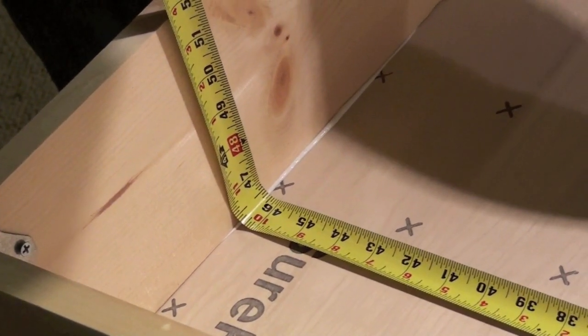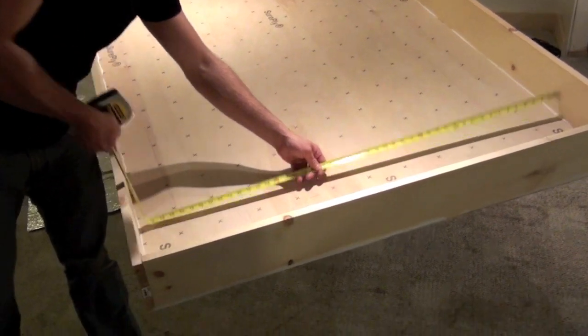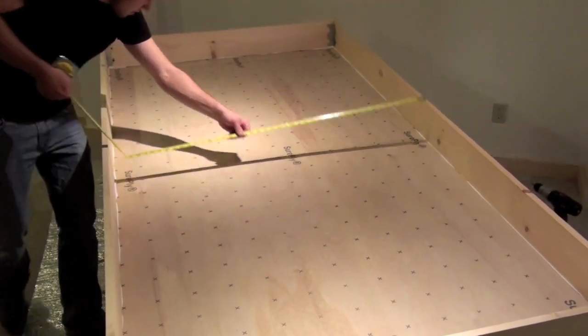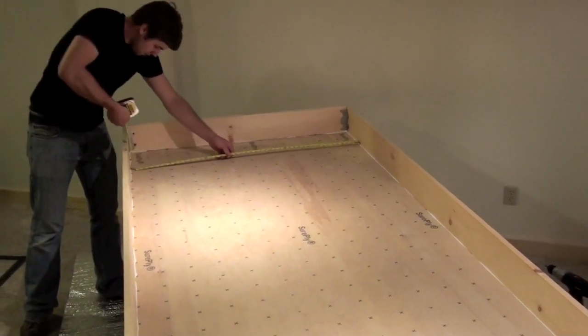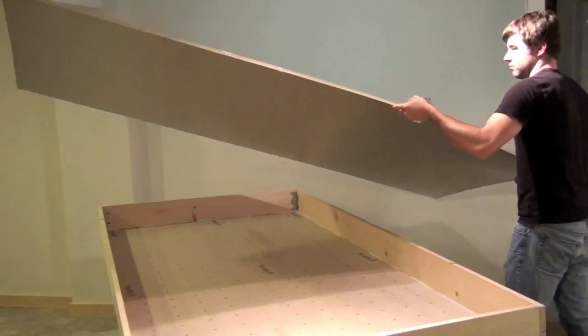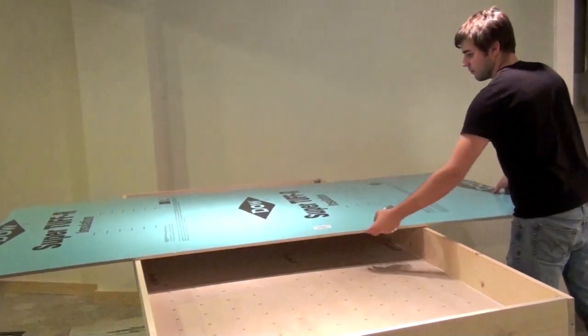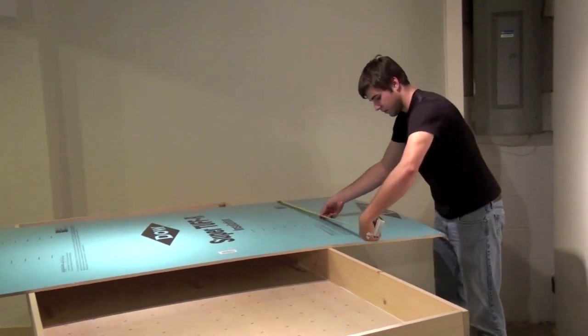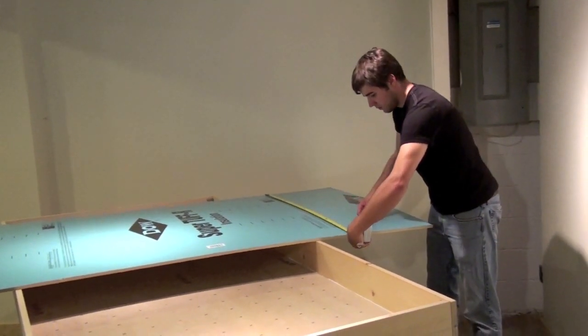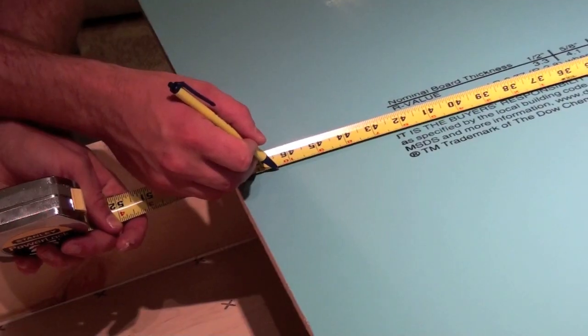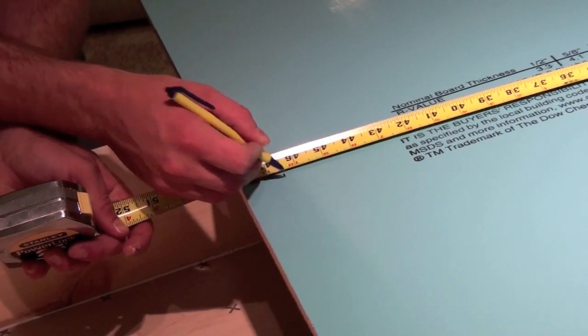Now we're going to measure 46 1/2 inches down the panel, just to be sure that our panel is true. And this will be our first measurement for the foam. So here's a sheet of foam insulation. We're going to measure 46 1/2 inches. We'll make a mark. We'll do this multiple times down that sheet of foam.